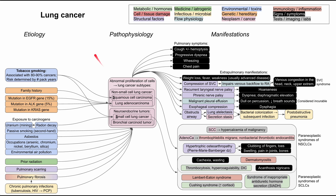This is a mechanism of disease map for lung cancer. I'll be talking about the etiology, the pathophysiology, and the manifestations for lung cancer. Each of the boxes is color-coded according to the legend in the top right.